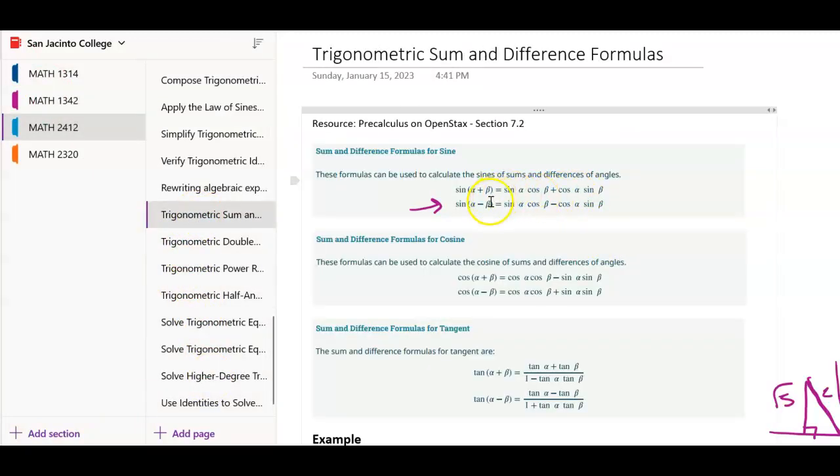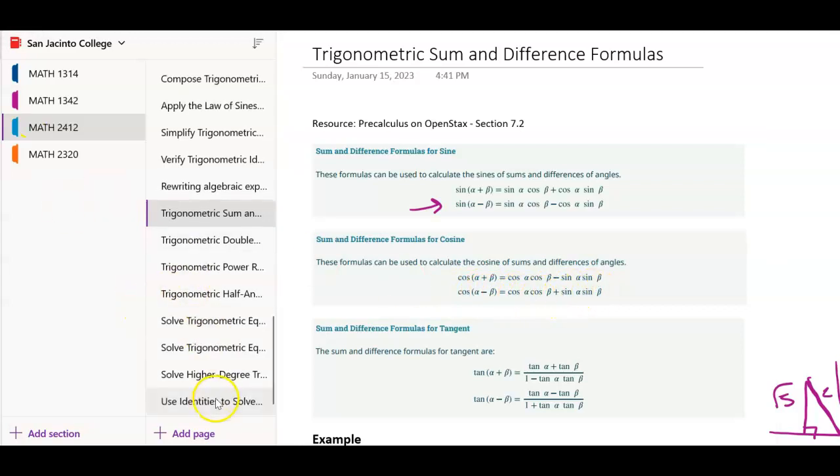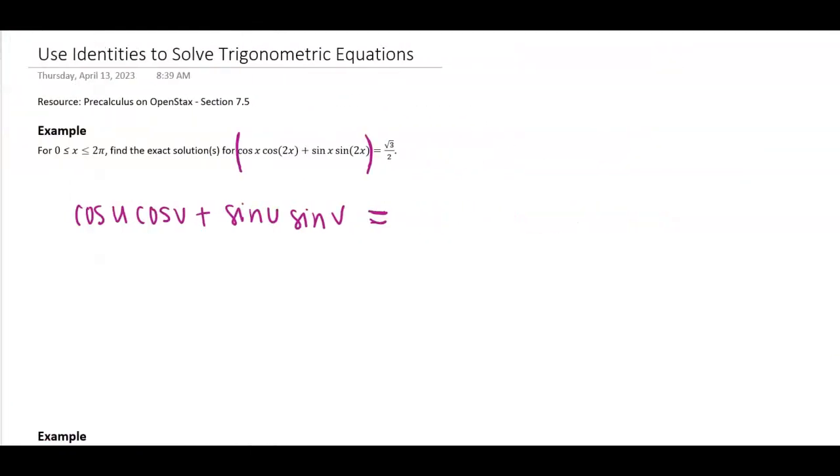Let me go find that. So if you look here, sine alpha minus beta, sine alpha plus beta, no, those ones have sines and cosines together. But if you come down here, right here. Cosine alpha minus beta is that. So let's go back into these notes.